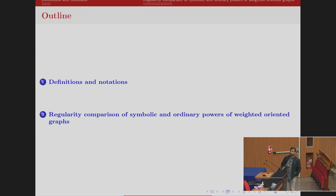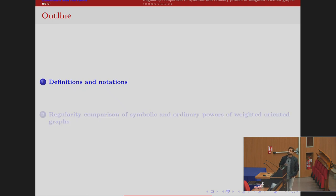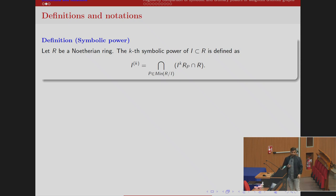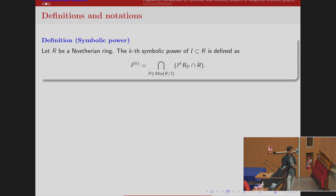Let me begin with some definitions and notations required for the talk, and then I will be talking about regularity comparison of symbolic and ordinary powers of weighted oriented graphs. Here is the definition of symbolic power: let R be a Noetherian ring, then the k-th symbolic power of an ideal is obtained by taking the k-th ordinary power, extending it to the localization R_P, contracting it back to R, and taking the intersection over all minimal primes of R mod I.